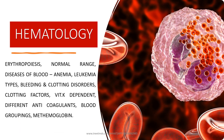The next topic is hematology. Under hematology, you have to cover erythropoiesis, the normal ranges of blood cells — both RBC, WBC and platelets. You have to cover almost all the diseases of blood because hematology is a very important topic, including different types of anemia, leukemia types, bleeding and clotting disorders. You have to know all the clotting factors, what are the vitamin K dependent clotting factors, the clotting pathway, the coagulation cascade, different anticoagulants used, what are the blood groupings, and what is methemoglobin.